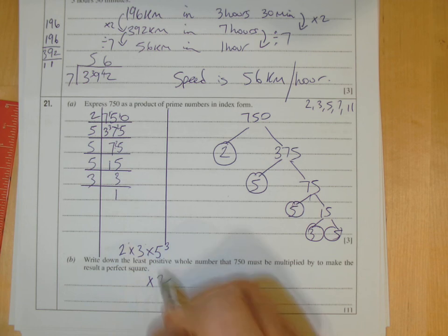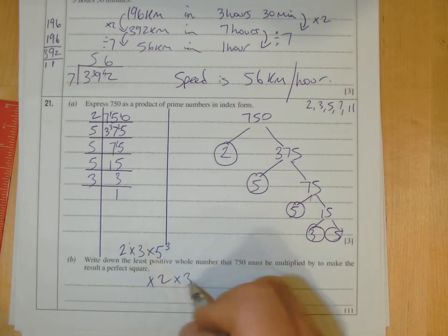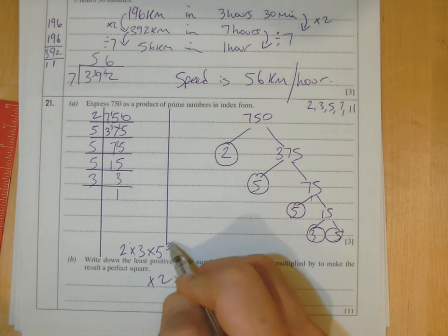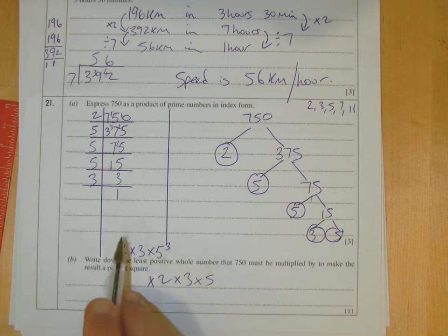If I times it by 3, I get 3 squared. And if I times it by 5, I get 5 to the power 4. It's all about making the powers even. Once the powers are all even, you get your answer. Unfortunately they were all odd, so I had to times by each of these here to make them all even.